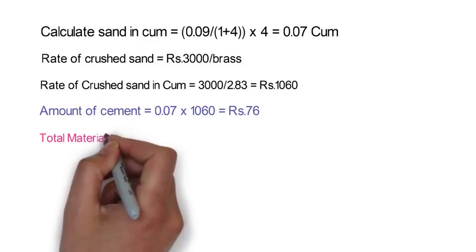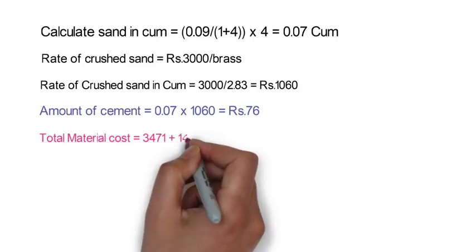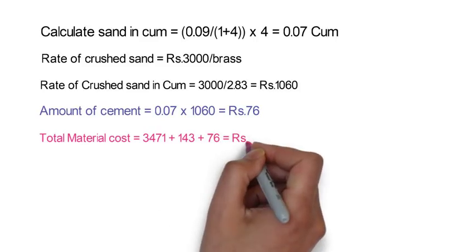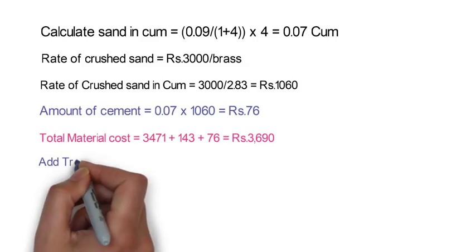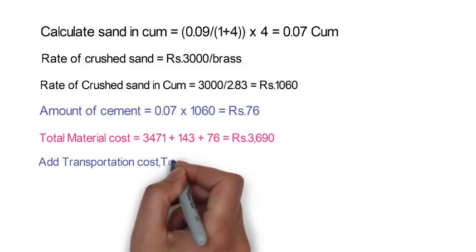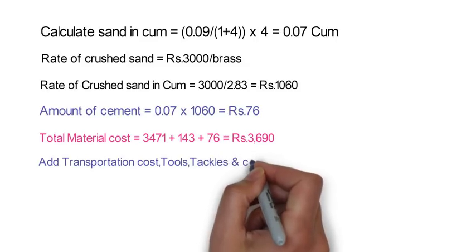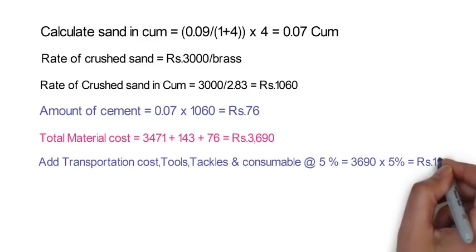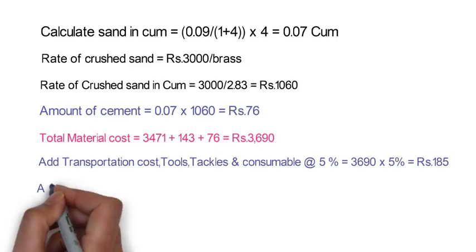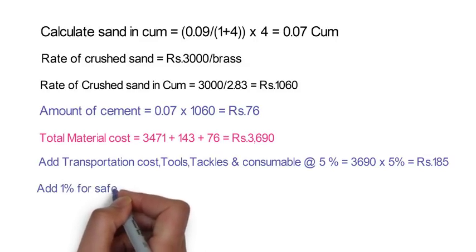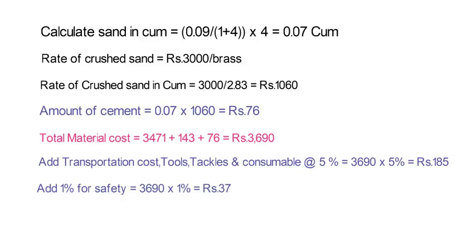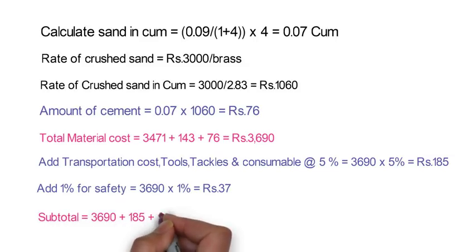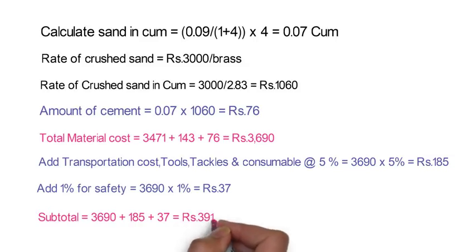Now the total material cost shall be 3,471 plus 143 plus 76 is equal to 3,690 rupees. Now add transportation cost, tools, tackles and consumables at 5% on material: 3,690 x 5% is equal to 185 rupees. Add 1% for safety on material: 3,690 x 1% is equal to 37 rupees. So the subtotal is 3,690 plus 185 plus 37 is equal to 3,912 rupees.